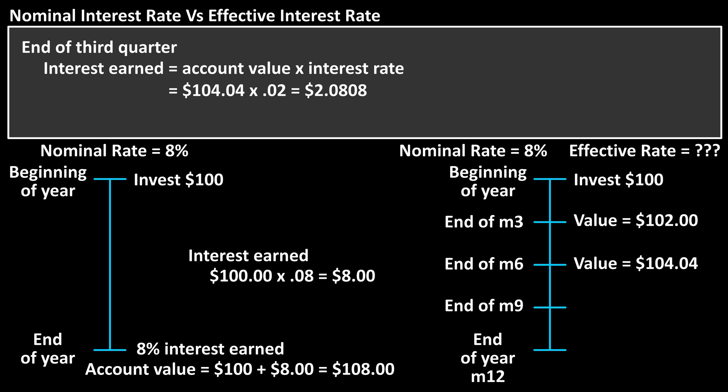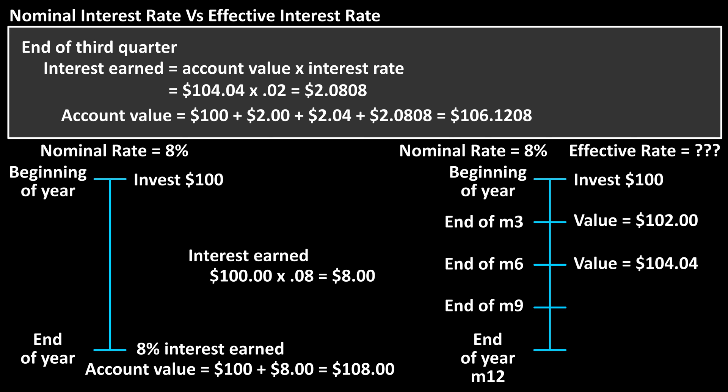I'm not going to round it off yet. So the account now has the $100 original investment, plus the $2 of interest from Q1, plus the $2.04 from Q2, plus the $2.0808 interest earned at the end of the third quarter. And the total in the account is now $106.1208.